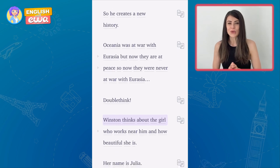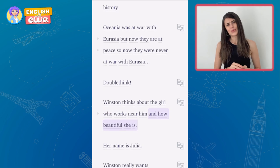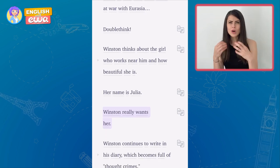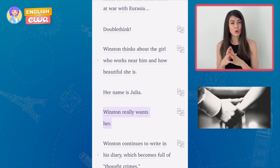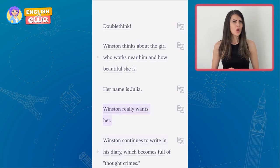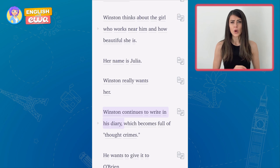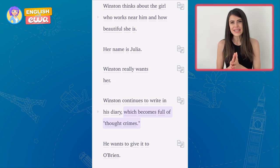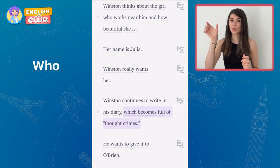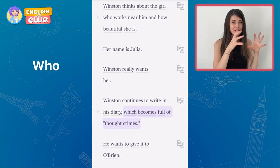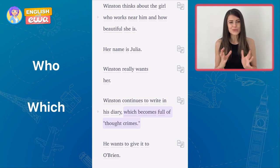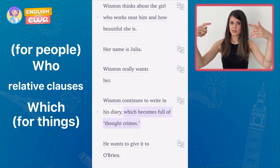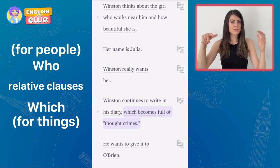Winston thinks about the girl who works near him and how beautiful she is. Her name is Julia. Winston really wants her — if you want somebody, it means you want to be with them, also sexually. Winston continues to write in his diary, which becomes full of thought crimes. Notice here: when he defines Julia, he used 'who'; when talking about his diary, he uses 'which.' These are relative clauses. We use 'who' for people, 'which' for things, and 'where' for places.